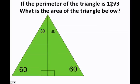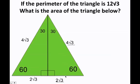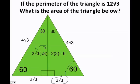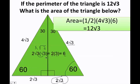What if the perimeter of the triangle is 12 times the square root of 3? I divide 12 times the square root of 3 by 3, and I get that each side is 4 times the square root of 3. I cut it in half, getting 2 times the square root of 3 and 4 times the square root of 3. The ratio is x, 2x, and x times the square root of 3 — in this case 2 times the square root of 3 times the square root of 3. Since square root of 3 times square root of 3 equals the square root of 9, which is 3, then 2 times 3 equals 6. My height is equal to 6. So 1 half times the base 4 times the square root of 3 times the height 6 is equal to 12 times the square root of 3.